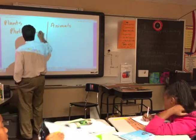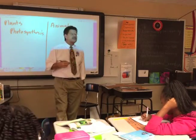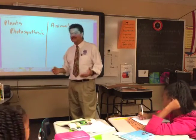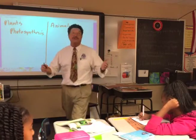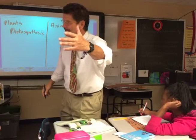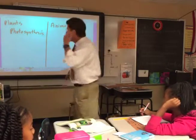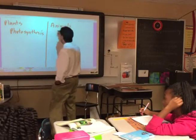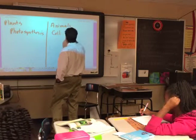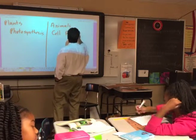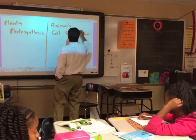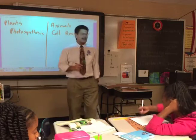Photosynthesis — photo means light, synthesis means to make. Plants get their energy through photosynthesis. Animals, on the other hand, get their energy through something called cellular respiration. That is a very complicated process, but we're going to talk about both.